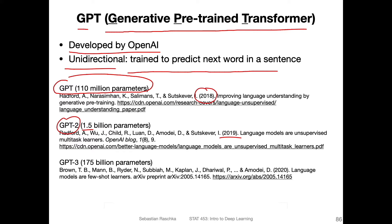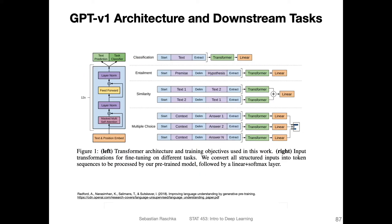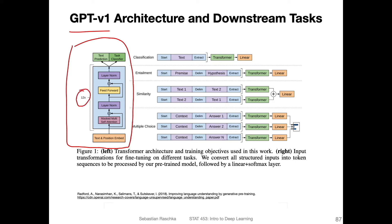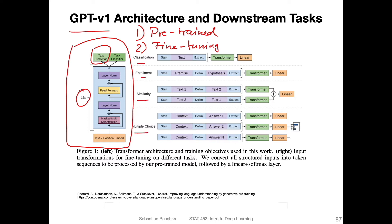We're not going to cover all the nitty-gritty details about this model, but here's a link to the original paper if you want to learn more after this video. Just to recap the GPT version one architecture: there was a transformer decoder with 12 transformer blocks that was first pre-trained with next word prediction, and then fine-tuned on downstream tasks such as classification, entailment, similarity, and multiple choice — using labeled datasets, whereas pre-training used large unlabeled datasets.